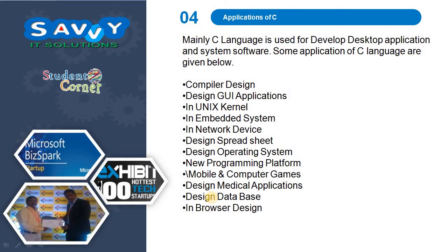Finally, the applications of C: C language is mainly used for developing desktop applications and system software. Some applications of C include compiler design, GUI applications, Unix kernel development, embedded systems, network devices, spreadsheet design, operating system design, new programming platforms, mobile and computer games, medical applications, database design, and browser design. Thank you.